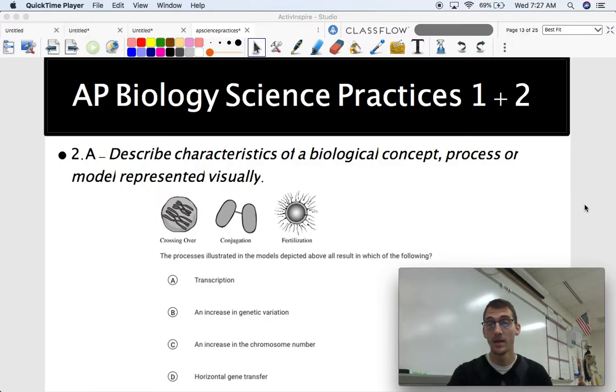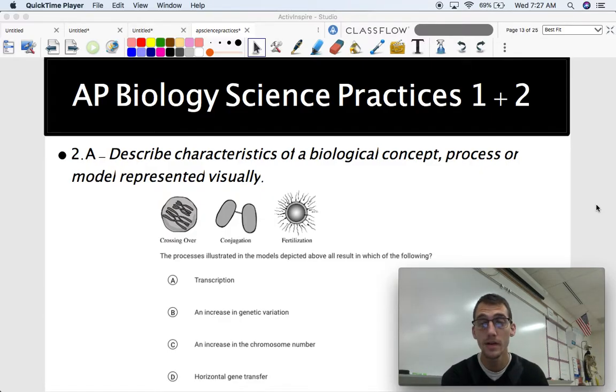But let's get started with 2.A. And again, it's very similar to 1.A, describe characteristics of a biological concept, process, or model represented visually. And here's an example of a multiple choice question. Here's a visual representation of crossing over, conjugation, and fertilization.